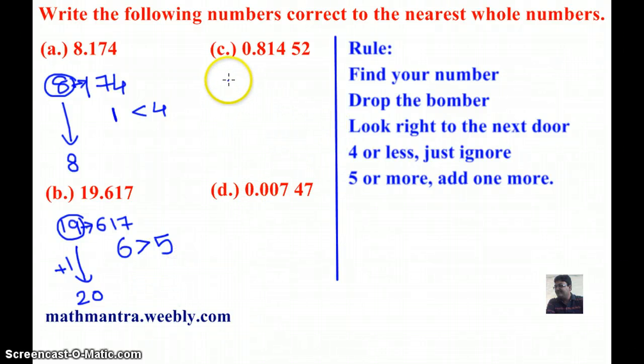Next question number C, 0.81452. So the whole part is 0 and the next number is 8, which is greater than 5, and therefore I must add 1 to 0 and my answer is 1.